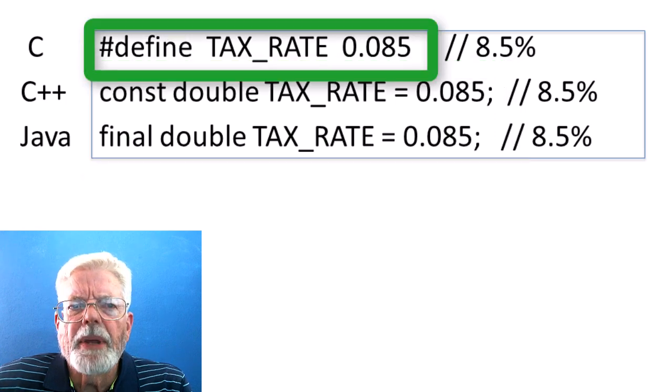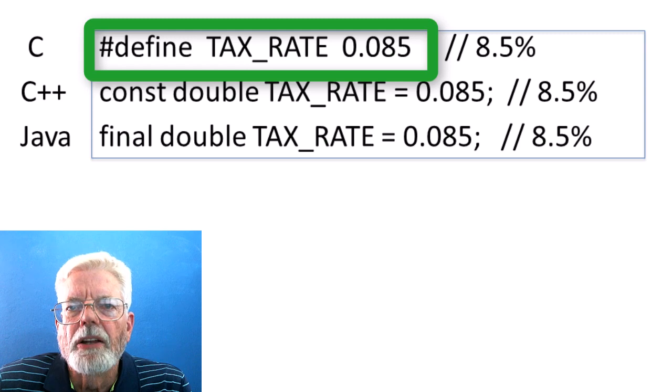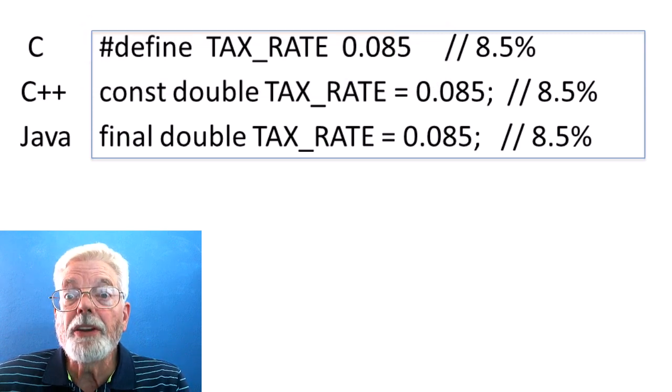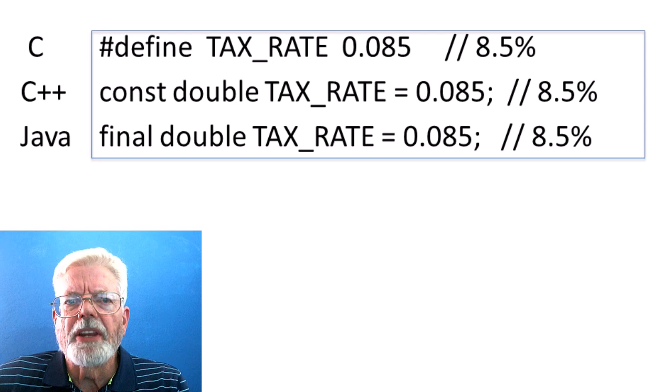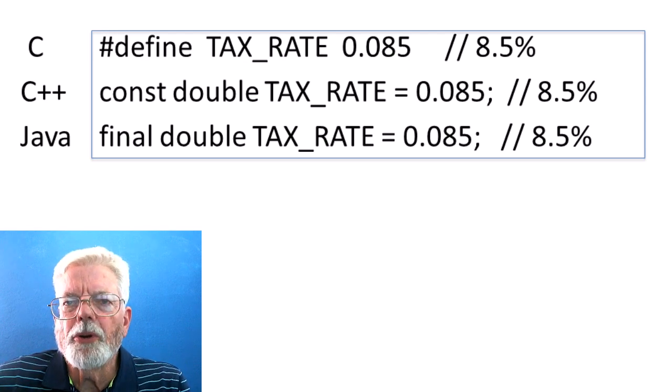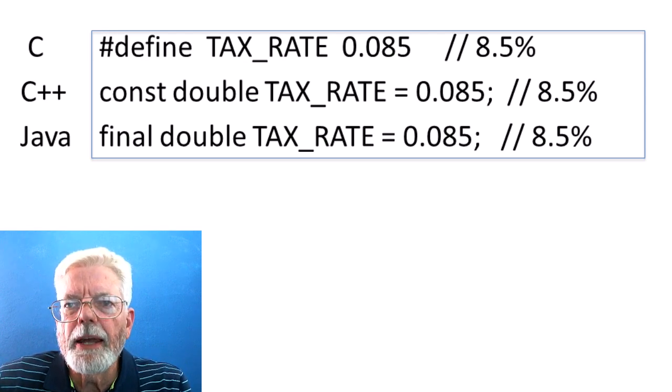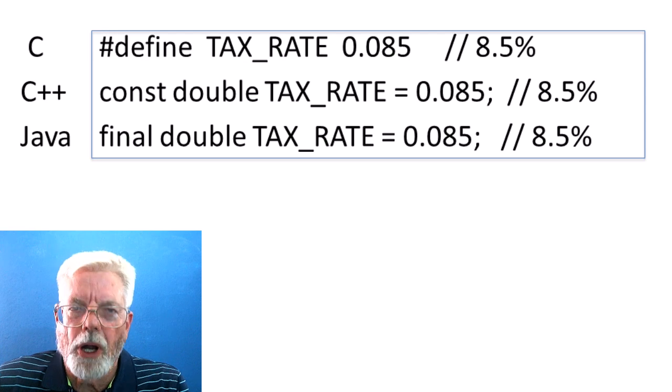A data type is not associated with the constant definition in C. Both C++ and Java are more advanced than C on the evolutionary scale for computer languages in that data types are part of the definition for a constant.